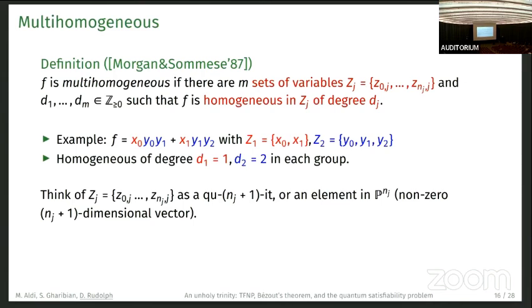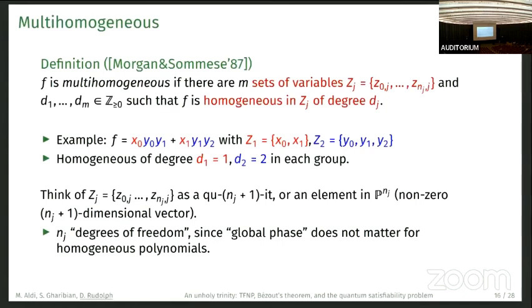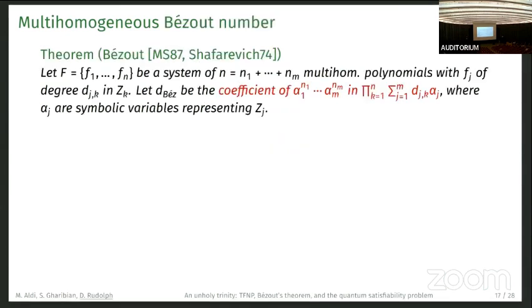The relation to quantum SAT is we can think of each of these groups as a C^{n_j+1} or an element of P^{n_j}, the projective space. Effectively, this is a set of non-zero n_j plus one dimensional vectors where we equate vectors that have the same global phase up to global phase. Effectively, n_j is the degrees of freedom in such a variable group because for a homogeneous polynomial, we can always disregard the global phase.